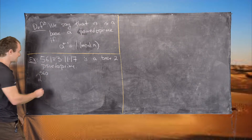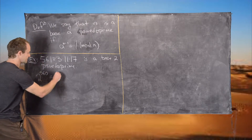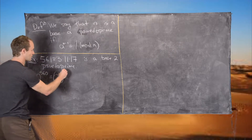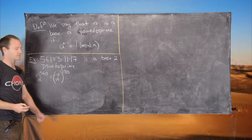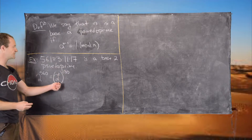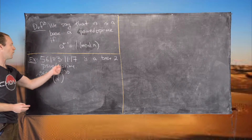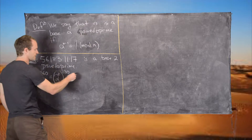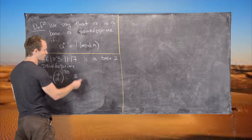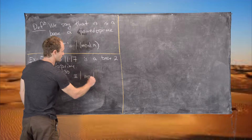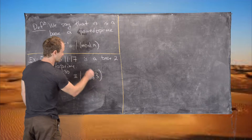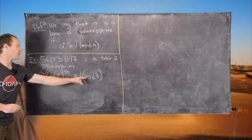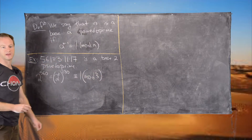Notice that 2 to the 560 equals 2 to the 2, all to the power 280. But 2 squared is congruent to 1 mod 3 by Fermat's Little Theorem, so this whole thing is congruent to 1 mod 3, with 3 being the prime.